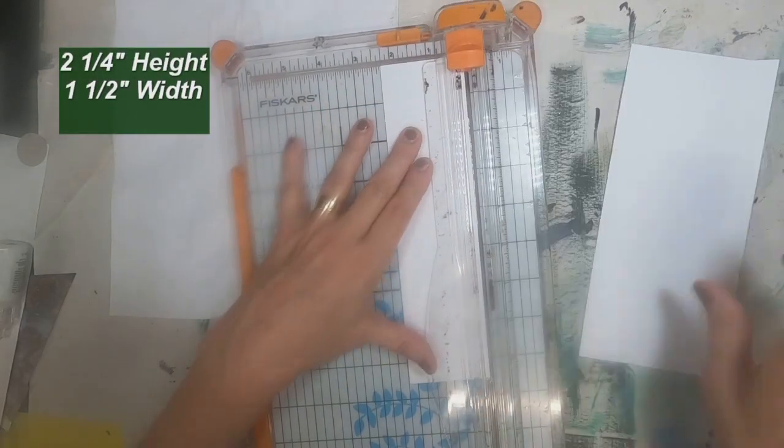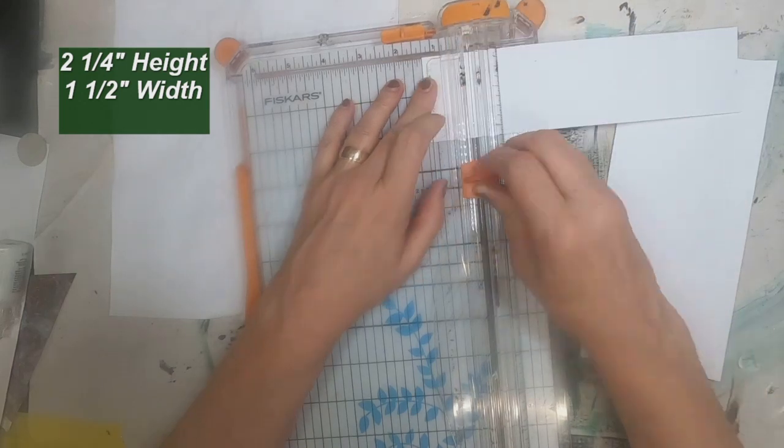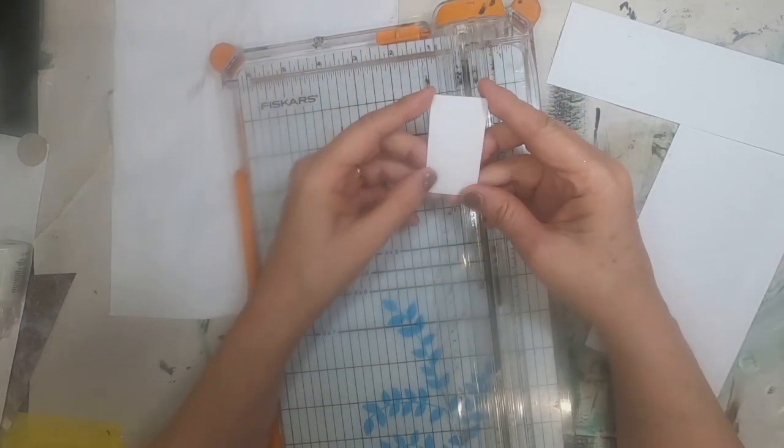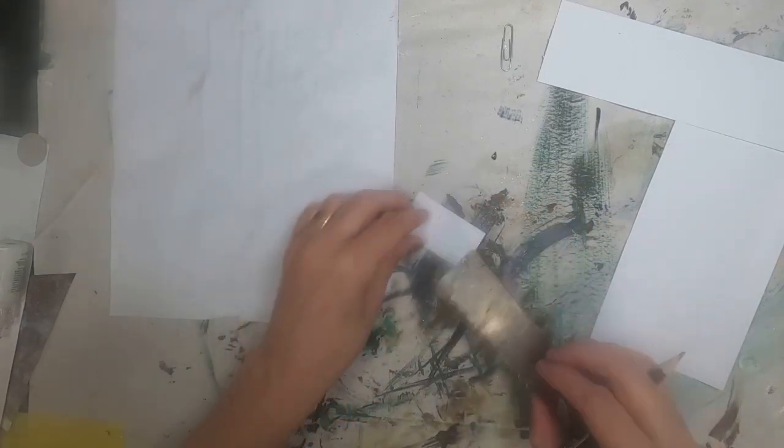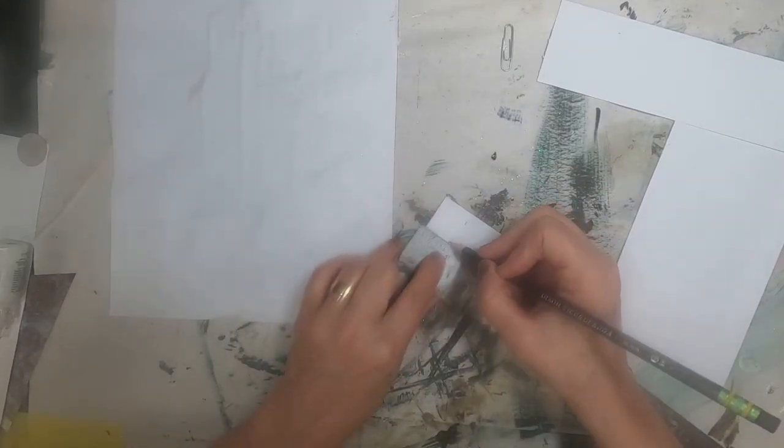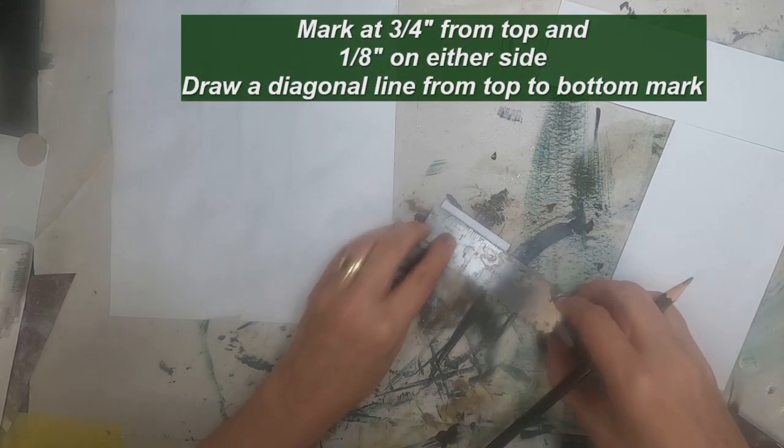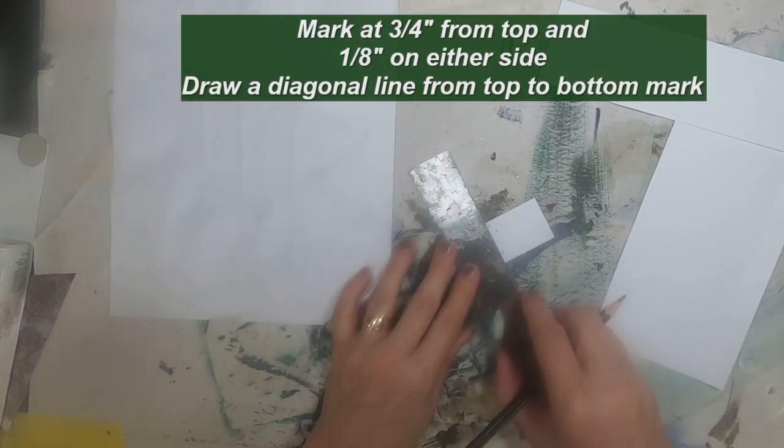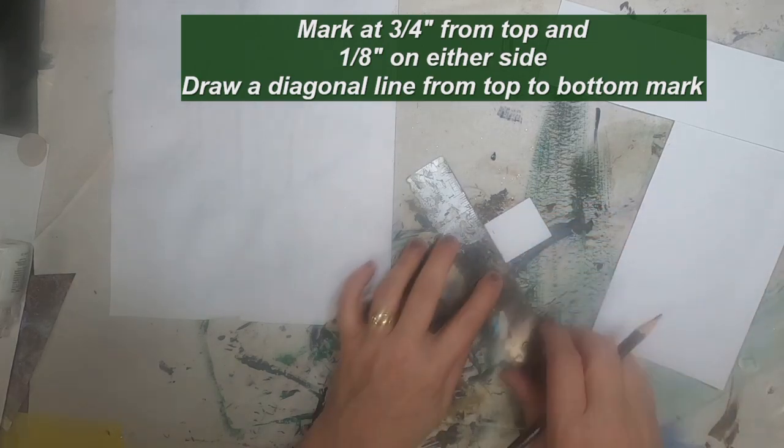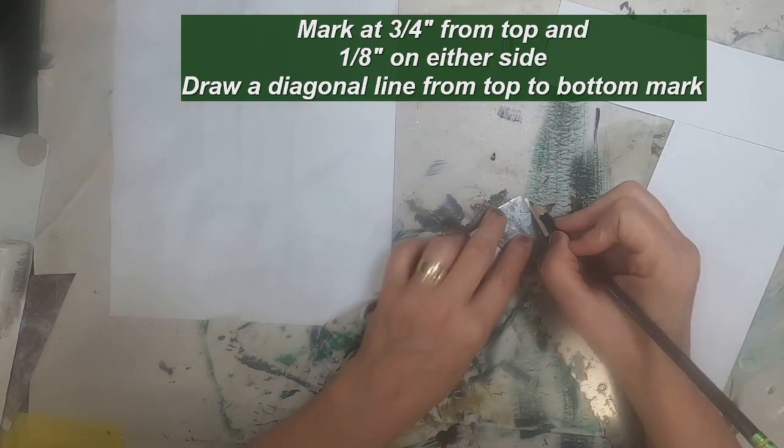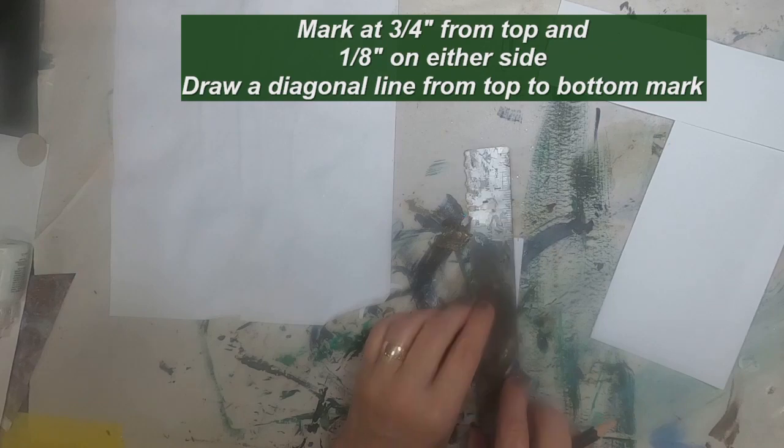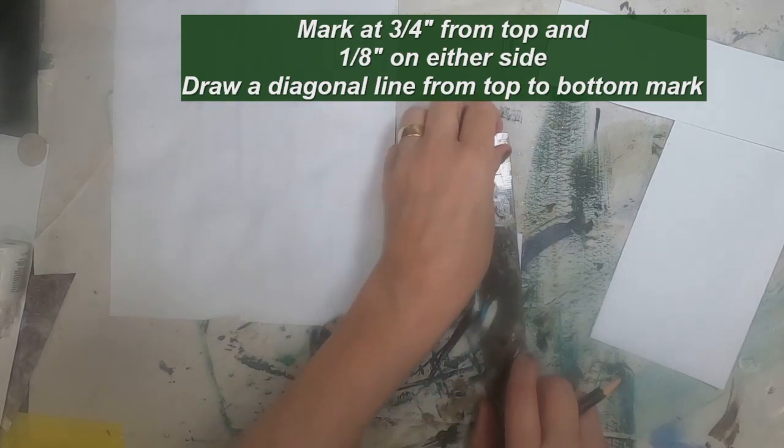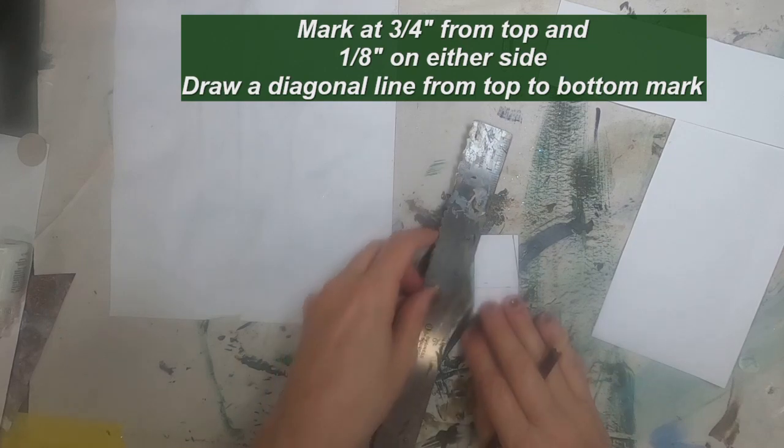Let's start by creating a template. I'm utilizing cardstock, cutting it at two and a quarter inches in height and one and a half inches in width, marking it at three quarter inches down from the top. This is where I'm going to insert the paperclip, and one eighth inch from each side.